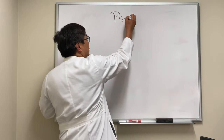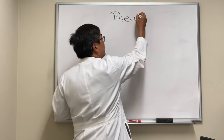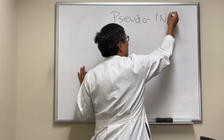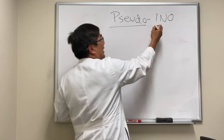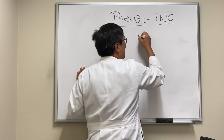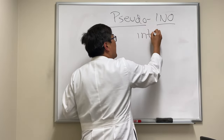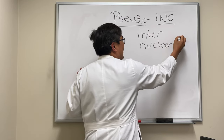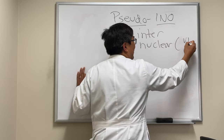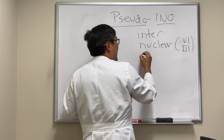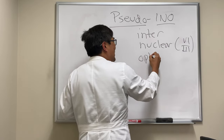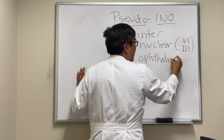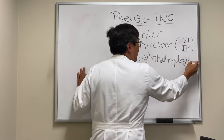Somebody wanted to know about pseudo-internuclear ophthalmoplegia. 'Pseudo' means false. 'Inter' means between, 'nuclear' means between two nuclei — and the two nuclei are six and three — and 'ophthalmoplegia' means the eye isn't moving properly because it's plegic.